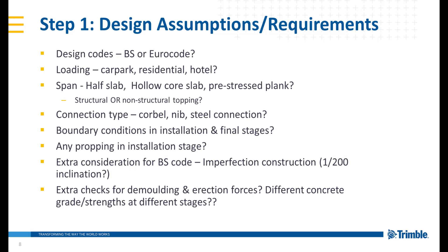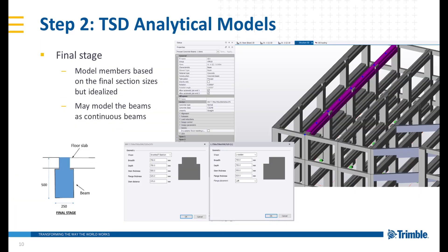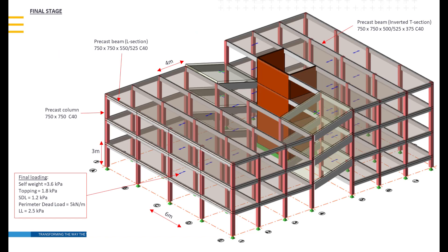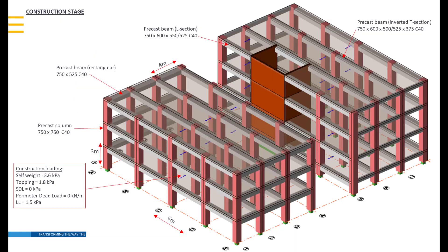Extra checks for demoulding and erection forces? Different concrete grade and strengths at different stages? Step 2: TSD analytical models. At final stage, apply final dead and imposed loadings. Precast slabs can be modeled using decking under precast concrete plank in the Home tab for materials, or simply use one-way slab. Model members based on the final section sizes but idealized. The beams may be modeled as continuous beams. In the final stage model, you can model the precast edge beam as L section and the internal beam as inverted T section. At construction stage, apply construction loadings. Update the member section sizes with smaller beam section. Update boundary conditions. Split the continuous beam and apply pin to the beam ends. You may remove the structural topping of precast slabs and reapply as dead load on the slabs. In the construction stage model, you can model the precast beam using smaller rectangular section, or model as smaller L section for the edge beam and smaller inverted T section for the internal beam.